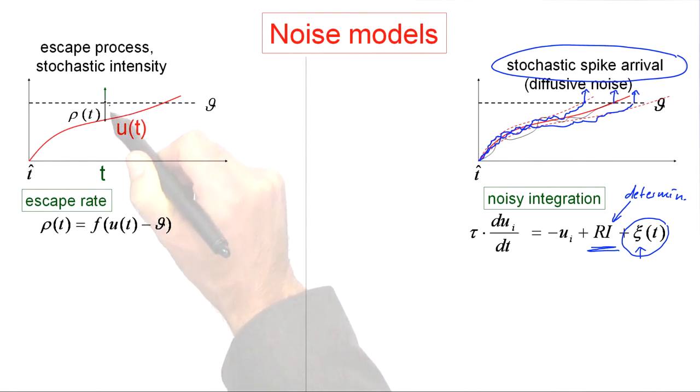And this instantaneous rate of escaping across the threshold depends on the momentary difference between the membrane potential at time t and the threshold.